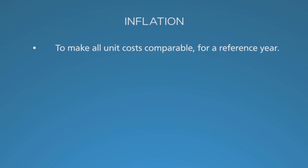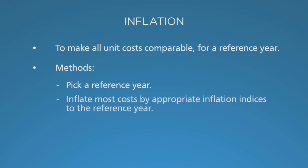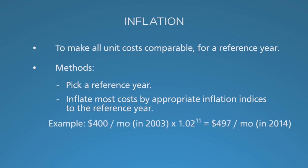We are all familiar with these trends in our own lives, as we've seen the cost of living rise over time. The methods are straightforward. First, pick a reference year — this is usually the year of completion of your analysis. Then, for each cost input, decide if it's subject to normal inflation. If it is, use local inflation indices to make the adjustment. For example, if the nurse earned $400 per month in 2003 and local wages are rising at 2% per year, that is $497 per month in 2014.